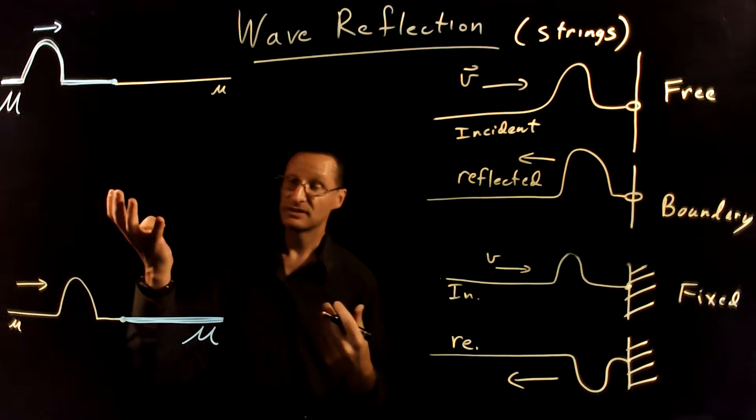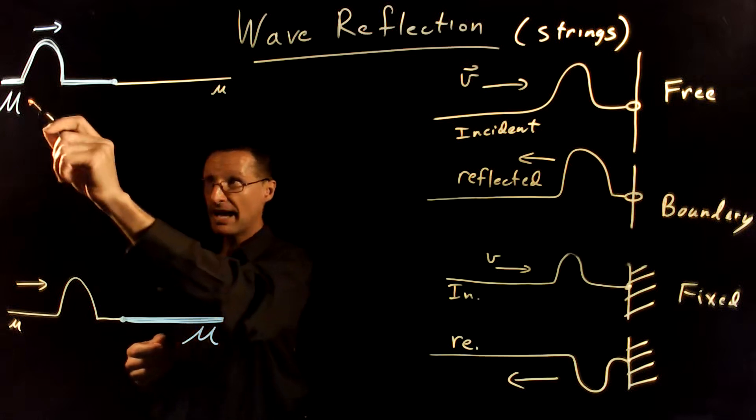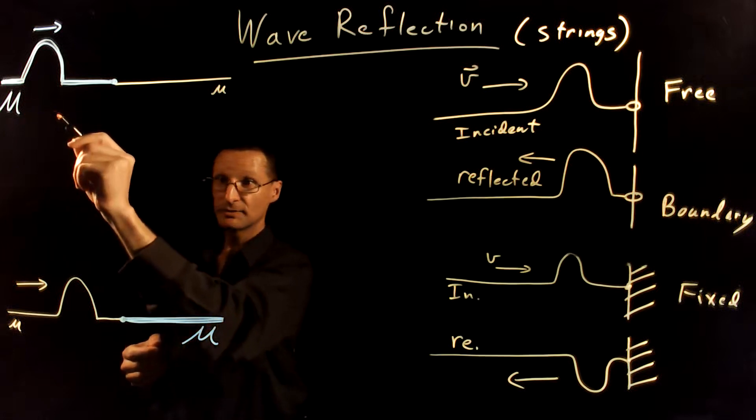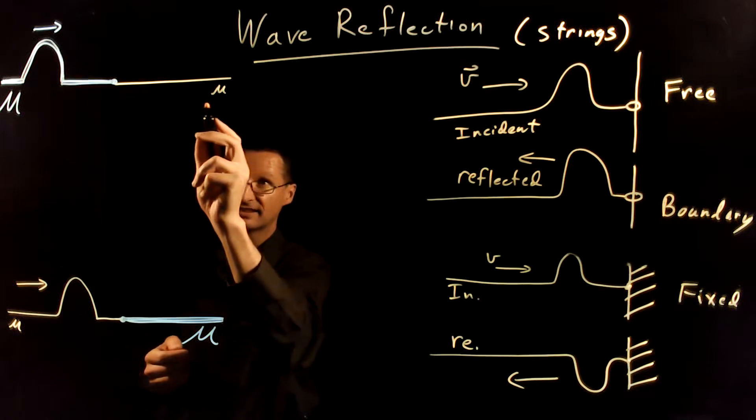Now let's look at some other examples that are very similar to this. In this first case, we have a very massive string with a large linear density mu, and we have an incident wave coming through, and it's tied to a less massive string.